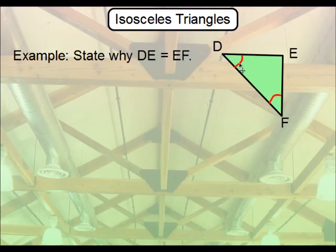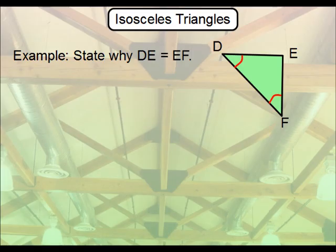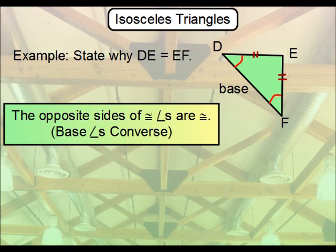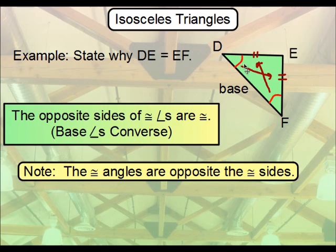This also works in reverse. If you have two congruent angles, why does DE equal EF? Note that the side connecting those two equal angles is our base in this case. Since you know this is the base, the other two sides have to be the same length. If you were doing a proof, the reason would be the converse of the base angles theorem — that is, the sides opposite congruent angles are congruent.